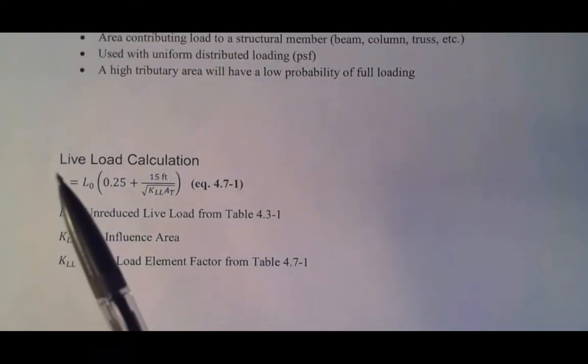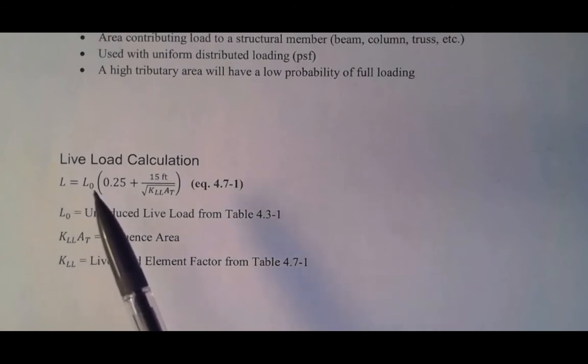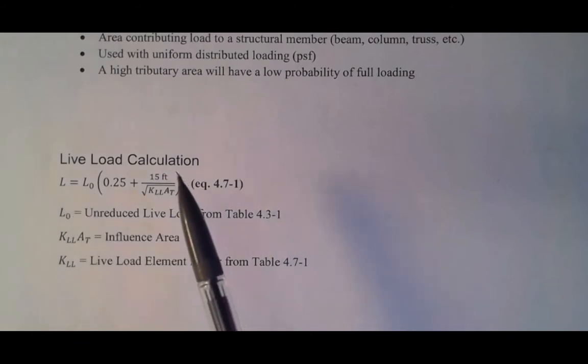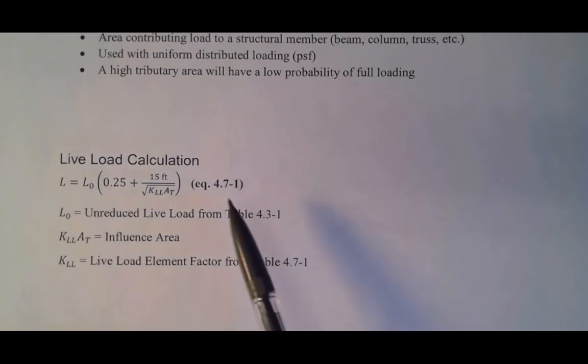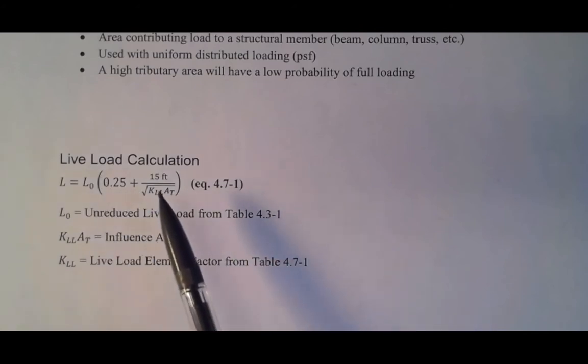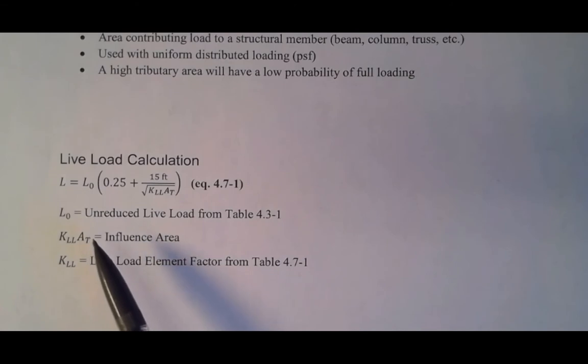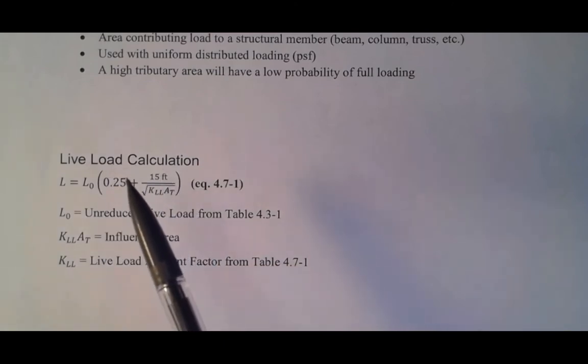And here's how you do it. So L is the live load that you'll be using. L₀ is what you get from the table, and then you've got this term here which allows you to reduce the live load. And I'll explain what's going on here. So of course L₀, like I said, you get that from the table. Down here in this square root term, that's what's known as the influence area, and you take the tributary area and then you multiply by this element factor here, and again that's a table in ASCE 7. And then basically this then reduces L₀, and that's what you use for the live load.